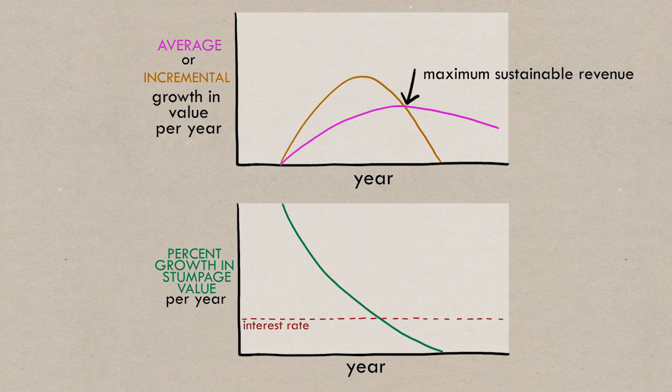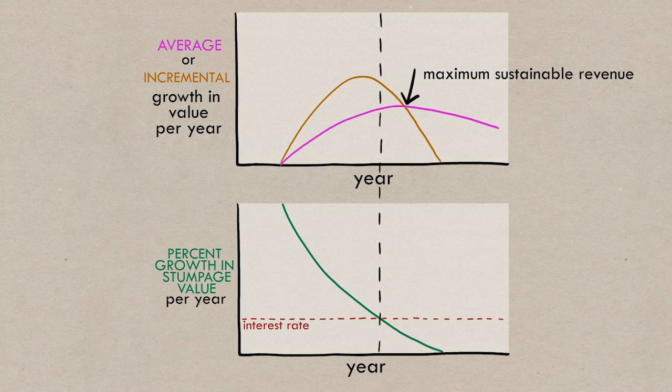Note, now that we're considering the opportunity cost on stumpage value, we're harvesting sooner. We'll look more at that later. There are much more realistic models for deciding the rotation age, models that look at more than one or two factors. But we're going to use this one just as a broad visualization.